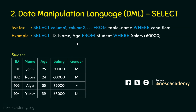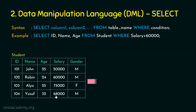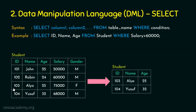Checking the condition — salary greater than 60000: 75000 is greater than 60000 (yes), and 68000 is greater than 60000 (yes), so two rows match: 103 and 104. The output shows only the three columns — id, name and age. Remember, the original table is not affected by executing a select query. The original table is affected only by insert, delete or update. Select is just a view.